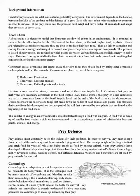Herbivores are classed as primary consumers and are at the second trophic level. Carnivores that prey on herbivores are secondary consumers at the third trophic level. Those animals that prey on other carnivores are tertiary consumers found at the fourth trophic level. At the end of the food chain are the decomposers — the bacteria and fungi that break down the bodies of dead animals and plants. The nutrients from this decomposition become part of the soil that is reused by new plants at the beginning of the food chain.